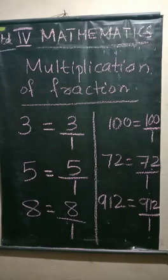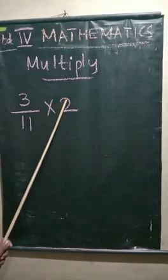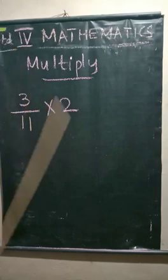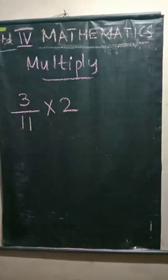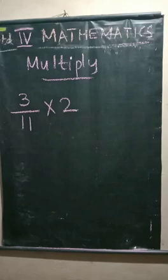Understood? Now, let us do multiplication of fractions. Multiply 3 by 11 into 2. Here, 3 by 11 is a fraction. Now, the whole number will multiply. This multiplication will be done: the numerator into numerator, and denominator into denominator.